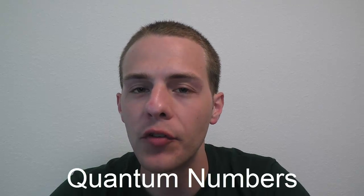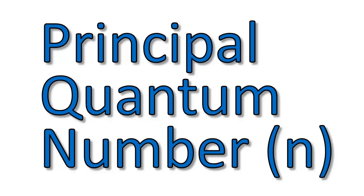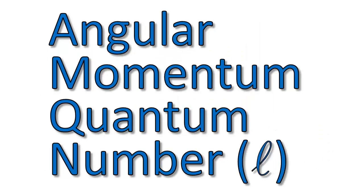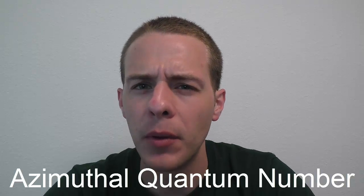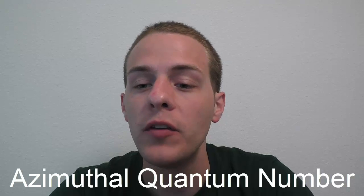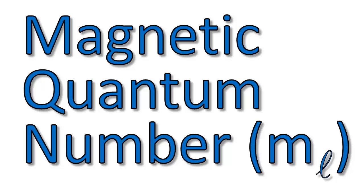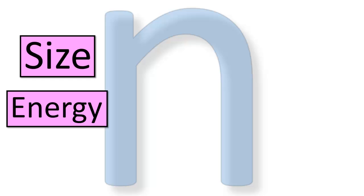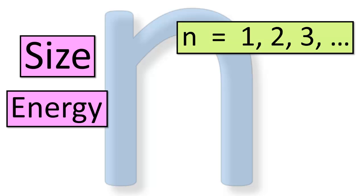Each orbital is represented by three quantum numbers — please don't cringe when you hear the word quantum, it's really not that bad. We've got the principal quantum number n, the angular momentum quantum number l (also called the azimuthal quantum number), and the magnetic quantum number m sub l. The principal quantum number n specifies the size and energy of an orbital, and it has positive integer values: 1, 2, 3, 4, 5, and so on — just as long as it's a positive integer.